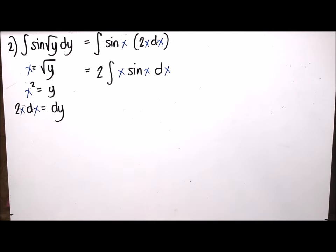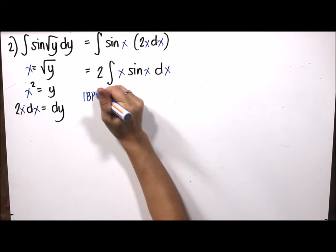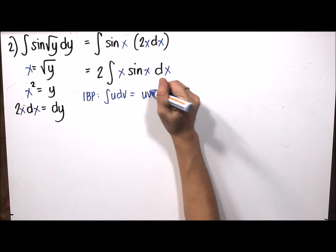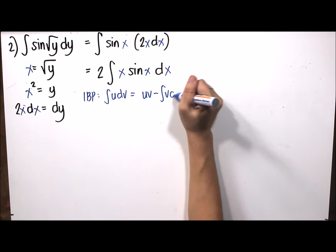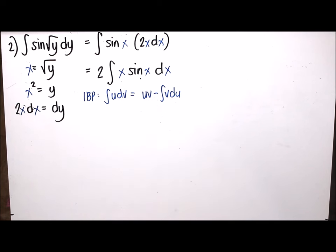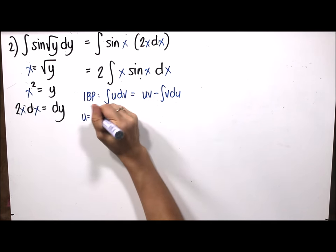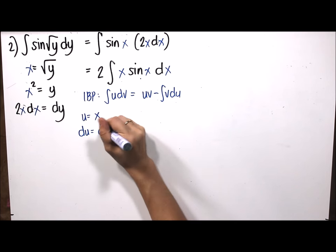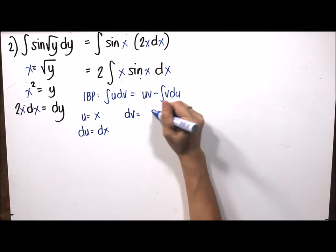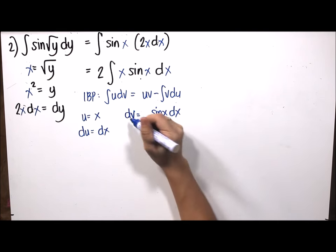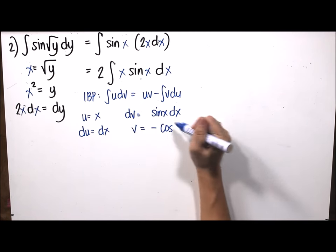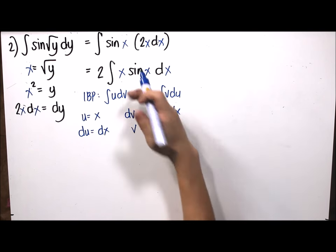Using integration by parts with the formula uv minus the integral of v du, and given algebraic times trigonometric combination, we let the algebraic term u equal x with differential du equals dx. The term dv equals sine(x) dx, and integrating gives v equals negative cosine(x).